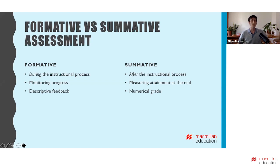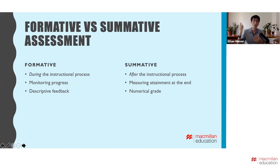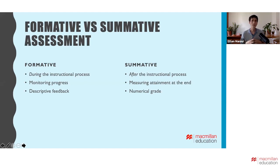Because we're doing formative assessment during the actual course, we're not measuring attainment like we are at the end of a course. What we're doing with formative assessment is monitoring progress — checking in, seeing how things are going. That could be a little more formal, like a quiz, or more informal, like simply listening to students during a speaking activity and giving them feedback afterwards. The third key difference is the type of information we share with students. With summative assessment we give grades or marks; with formative assessment we use description — discussing strengths and weaknesses, what's going well, and giving concrete advice about how to do better.